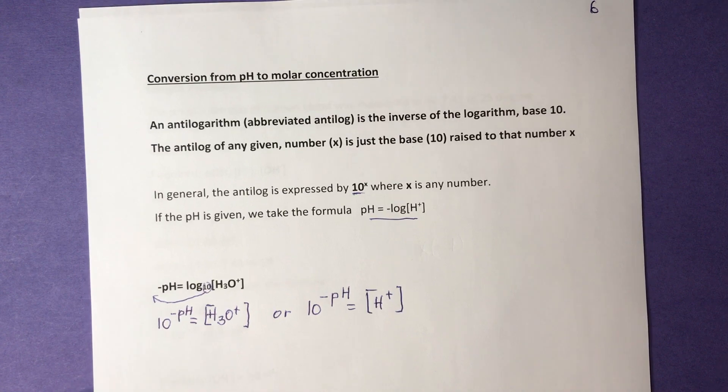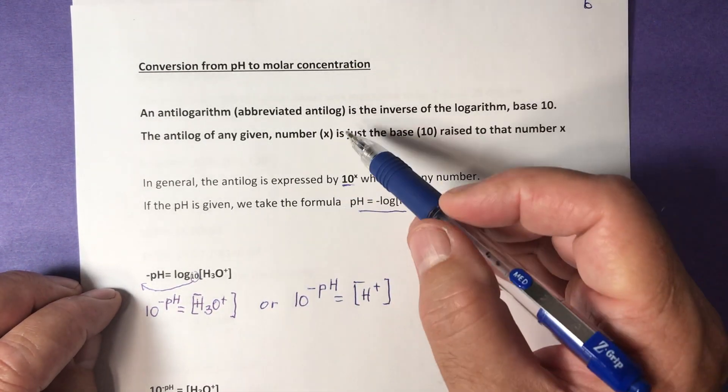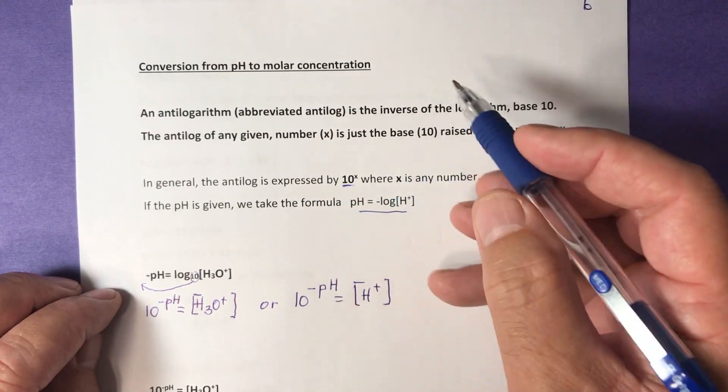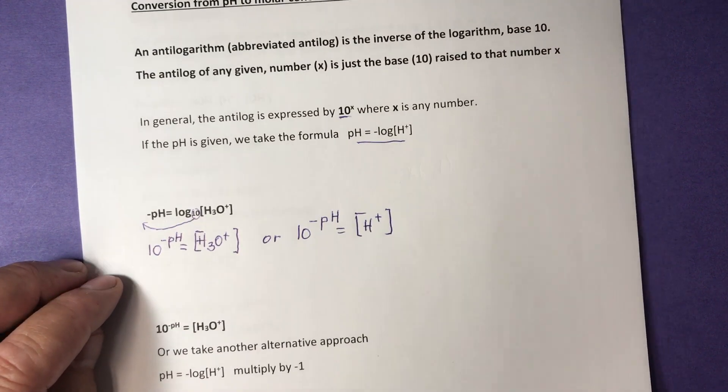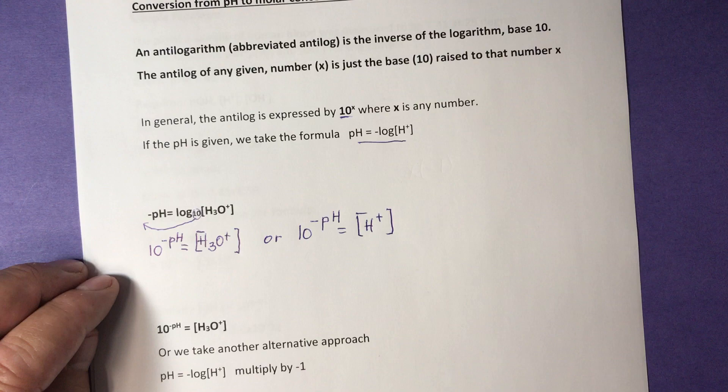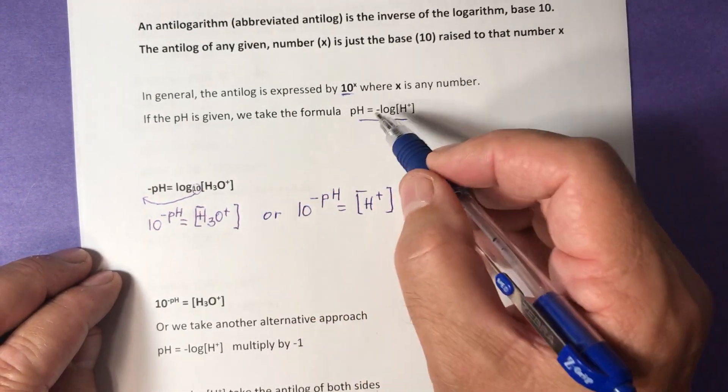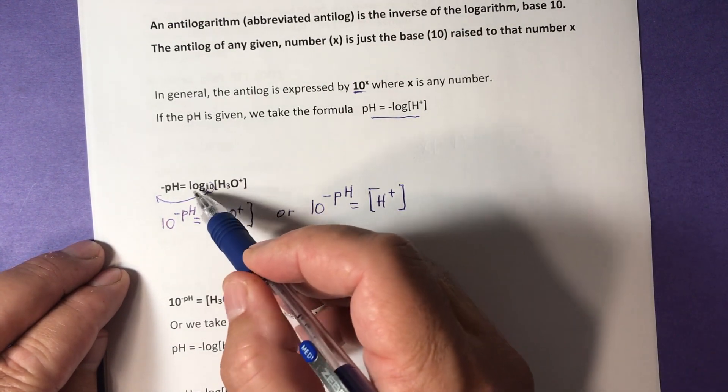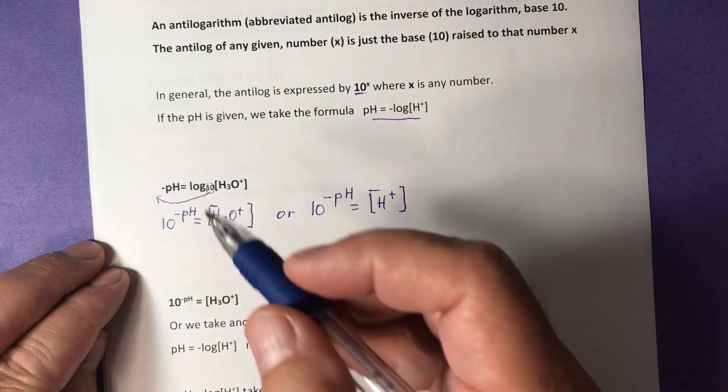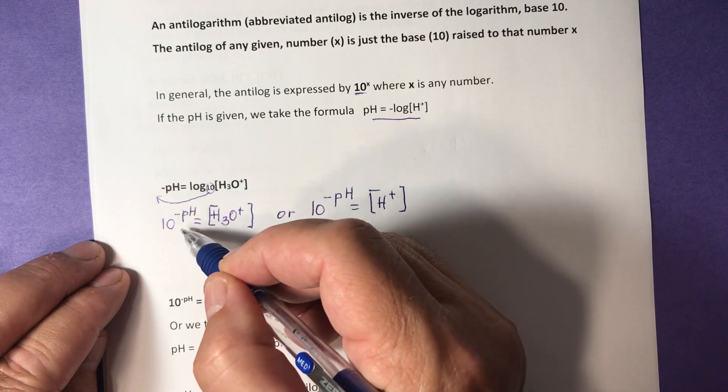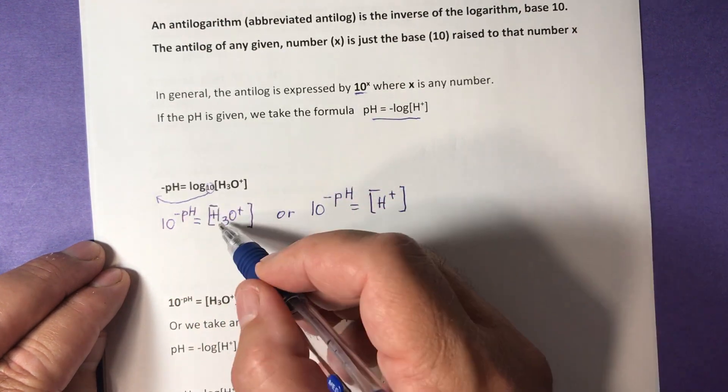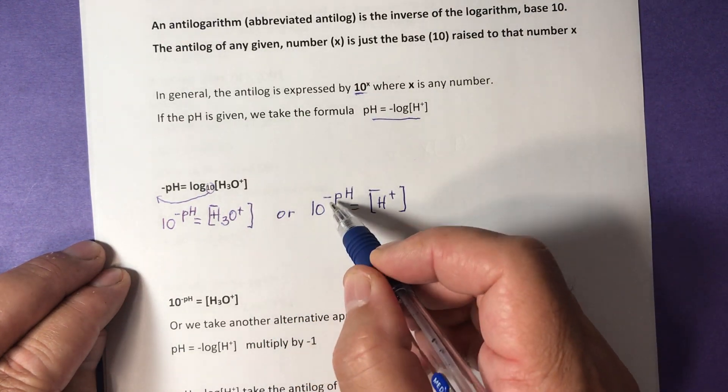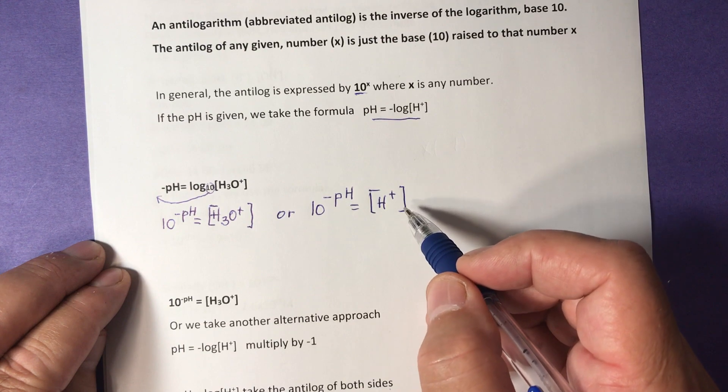Conversion from pH to molar concentration. An anti-logarithm, abbreviated anti-log, is the inverse of the log base 10. The anti-log of any given number x is just the base 10 raised to that number. In general, the anti-log is expressed by 10 to the power of x, where x is any number. However, if the pH is given in a problem, we take the formula pH equals negative log of H+. We have to convert now this equation from a log form into an exponential form. For that, we take the base and move it to the other side of the equal sign. And negative pH is the power now, equal to hydrogen ion concentration, H3O+ concentration, and remove the word log. Or you can write it as 10 to the power of negative pH equals H+ concentration. It's the same thing.